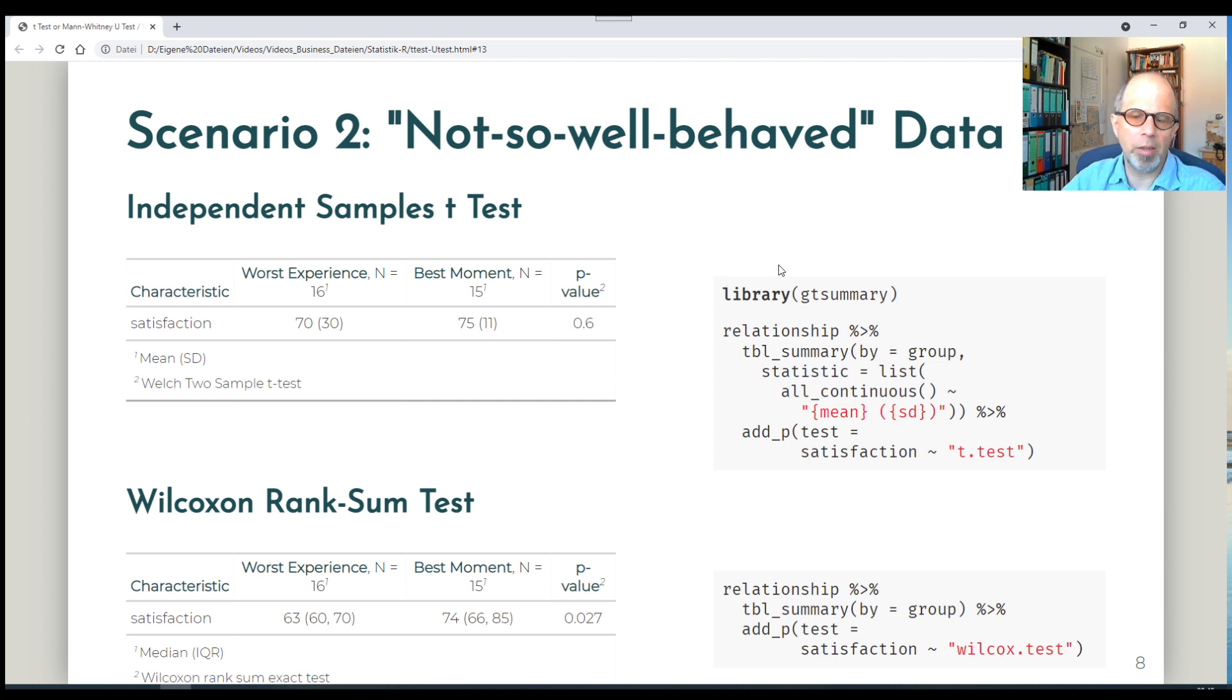We can say there's a trade-off that we have to make. While the Wilcoxon rank-sum test is more robust towards outliers or violations of assumptions, it uses less information in our data. So it disregards how far data points are apart from each other. We lose some of the information in the data using the more robust test.